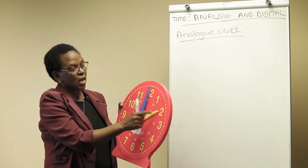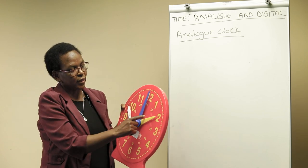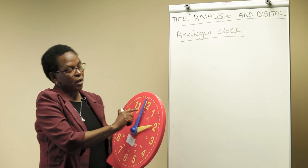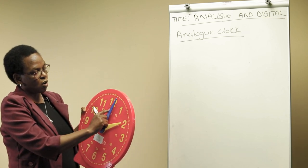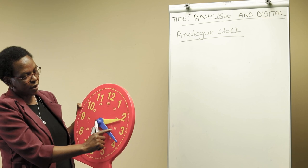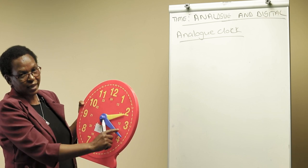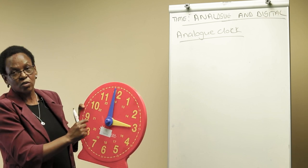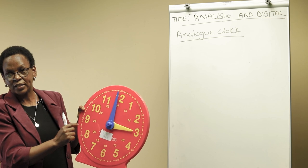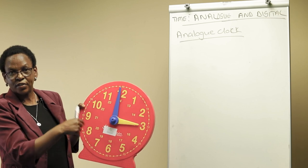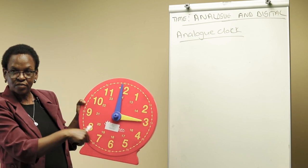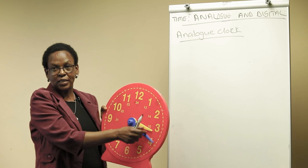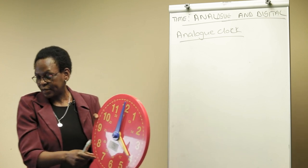The hands show us what the time is. The clock goes from the right-hand side to the left-hand side — this is called clockwise. We don't have a clock that goes from left to right; it's always clockwise.